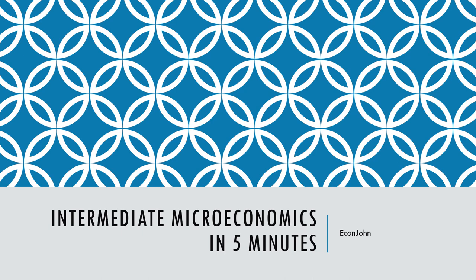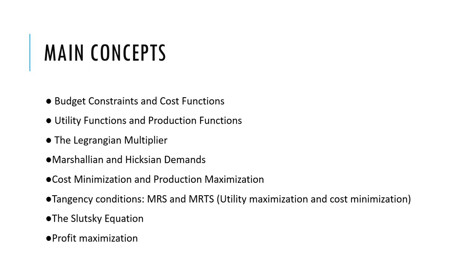Okay, Econ John here. I'm going to try to teach intermediate microeconomics in five minutes. Here we go. In your standard intermediate microeconomics course, you'll learn about budget constraints and cost functions, utility functions and production functions, the Lagrangian multiplier, finding Marshallian and Hicksian demands, cost minimization and production maximization, tangency conditions like the marginal rate of substitution and marginal rate of technical substitution.